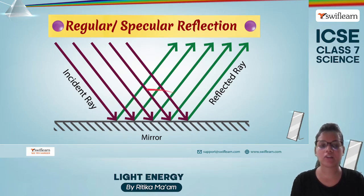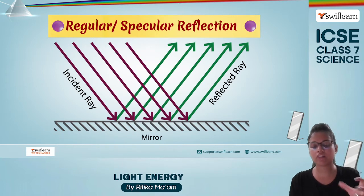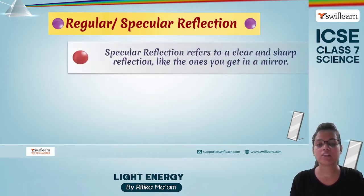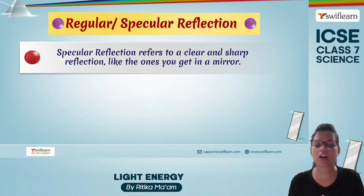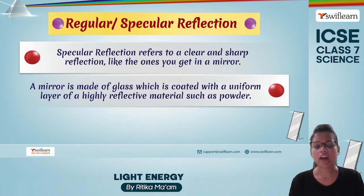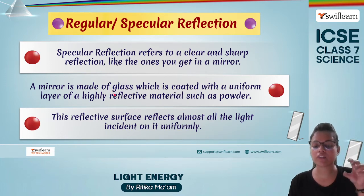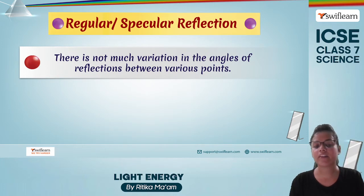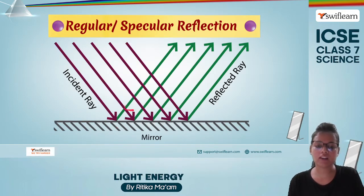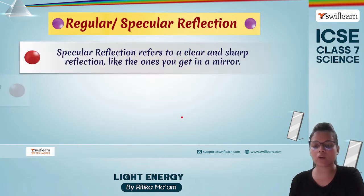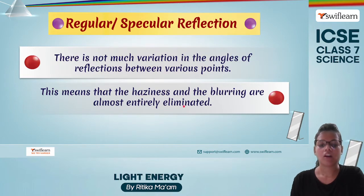In regular reflection, the rays follow a very particular, uniform pattern. Regular or specular reflection refers to a clear and sharp reflection, like we get in a mirror. Since a mirror is made of glass coated with a uniform layer, it becomes highly reflective. This surface reflects all incident light in a uniform pattern, and there is not much variation in the angles of reflection between various points — all the angles are almost the same. This is what leads to regular reflection.